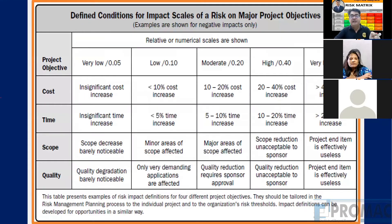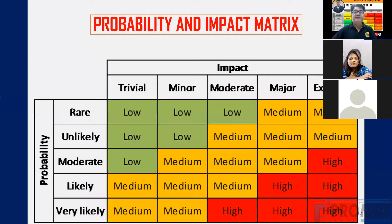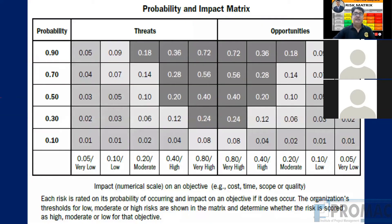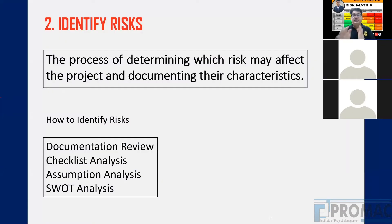All of this — cost, time, scope, and quality — is part of the risk management plan. This is a template for that. There is also a template which can be used for the risk and probability matrix. All of this is part of the risk management plan. This was about the risk management plan.